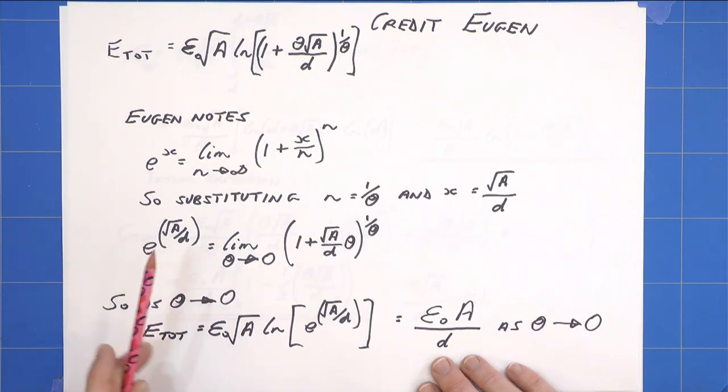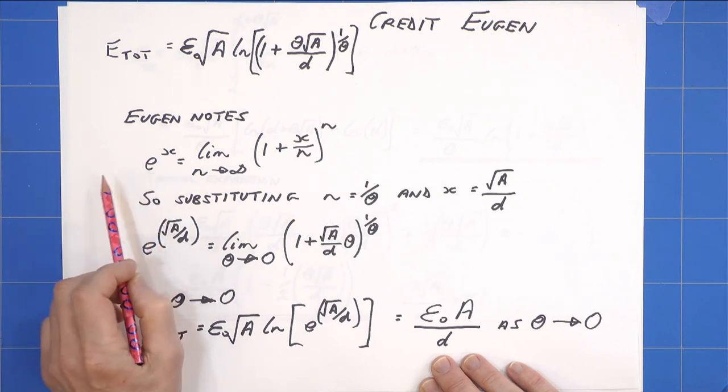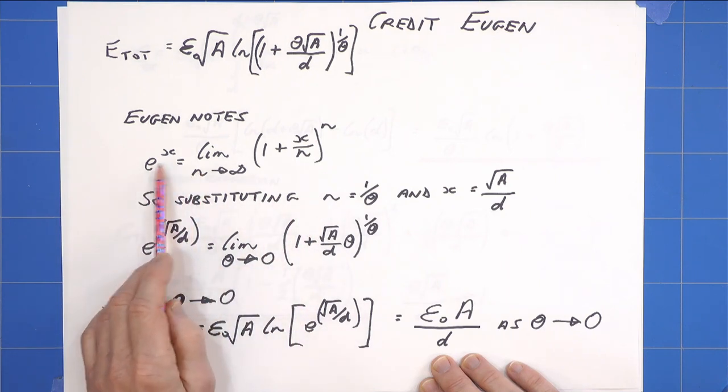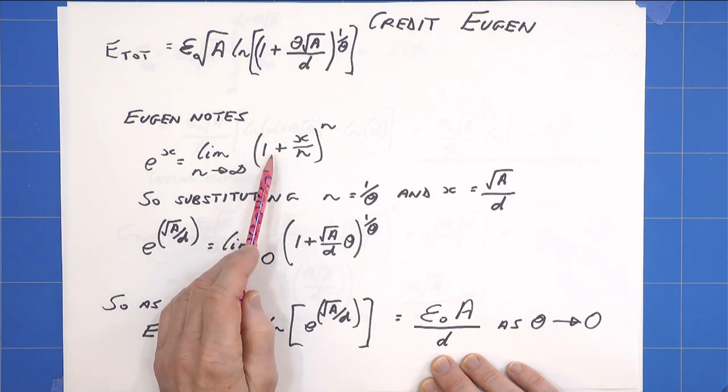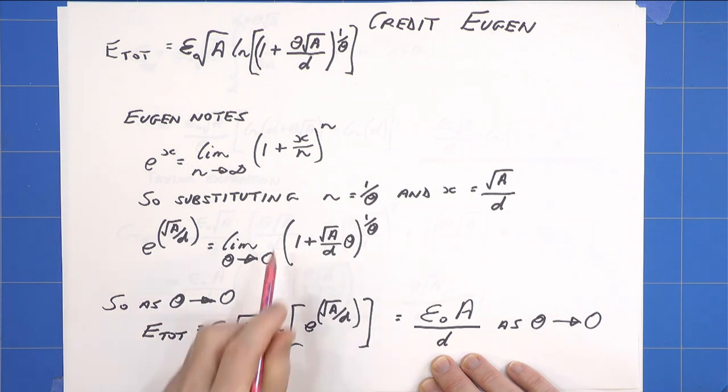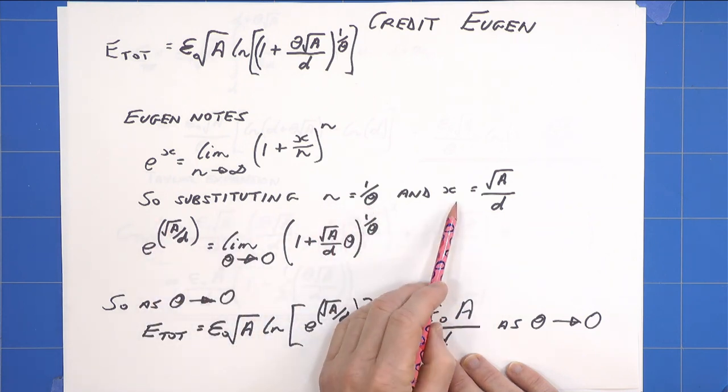He then notes that a definition of e to the x—and this was due to Leonard Euler, a famous mathematician—is that e to the x equals the limit as n goes to infinity of one plus x over n, all raised to the power n. Every mathematician worth their salt will know that off by heart. So then he does something I think is very clever: he substitutes n equals one over theta and x equals root A over d.